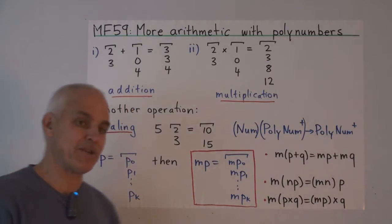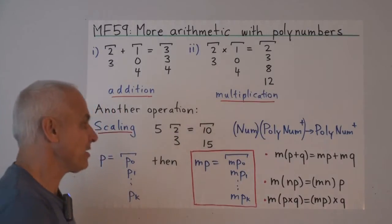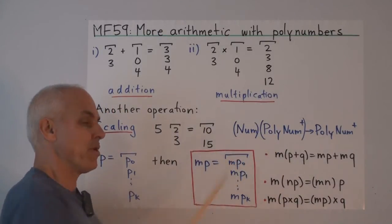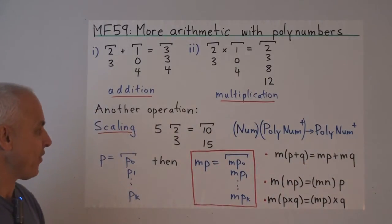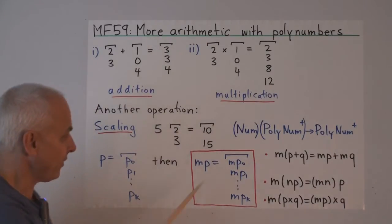Today, let's start off by talking about another operation, the idea of multiplying a polynumber by an ordinary number, to give us another polynumber. So for example, here is a polynumber 2, 3, multiplied by the ordinary number 5, gives us the polynumber 10, 15.